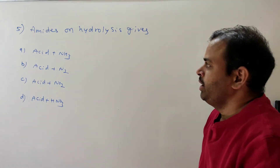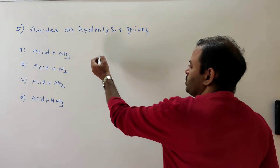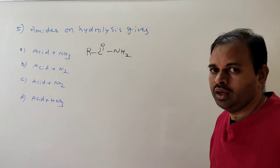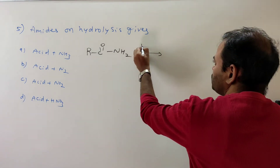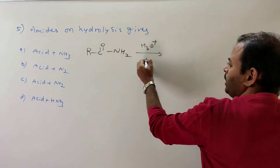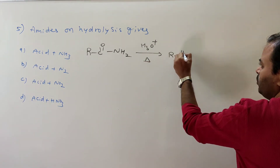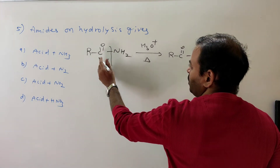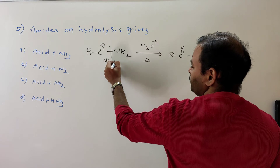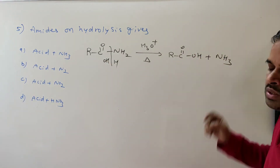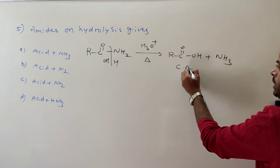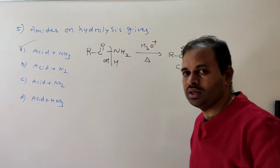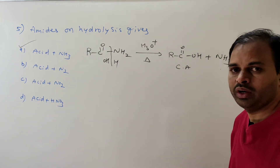Fifth question: amides on hydrolysis give what? Amides are RCONH2. On hydrolysis with H3O+ and heating, they give RCOOH plus NH3 — carboxylic acid and ammonia. So option A is correct. This is also a preparation method for carboxylic acid from amides.